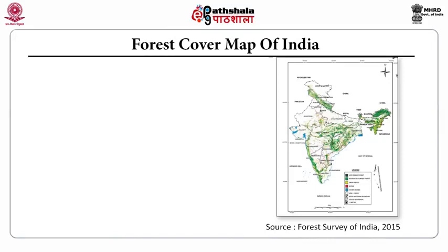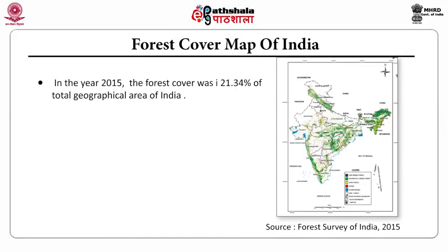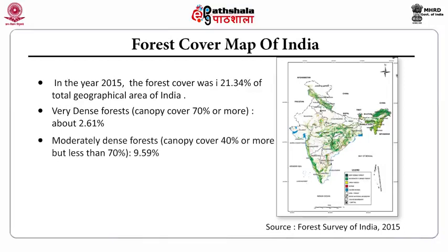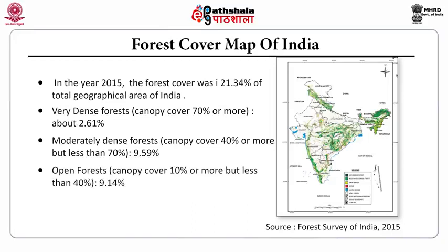The forest cover map of India for the year 2015 shows the forest cover was 21.34% of the total geographic area of India. Very dense forests having canopy of 70% or more accounted for 2.61% of the forest area. The moderately dense forest where canopy cover is 40% or more but less than 70% accounts for 9.59% of the forest area. The scrub forest where canopy cover is 10% or more but less than 40% formed 9.14% of the forest.